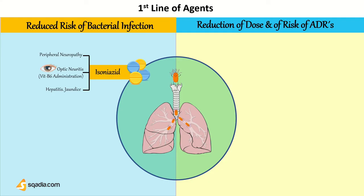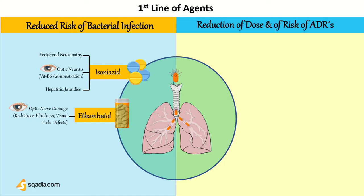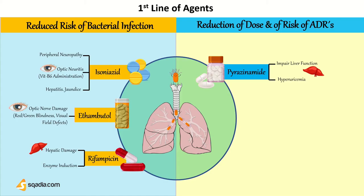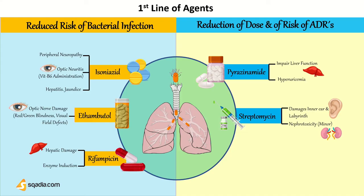Isoniazid also causes hepatitis. Ethambutol is famous for optic nerve damage — it can cause visual field defects and color brightness changes. Rifampicin gives a reddish color to the urine, which can be mistaken for myoglobinuria or hemoglobinuria. It also causes hepatic damage and enzyme induction, responsible for drug interactions with other drugs. Pyrazinamide causes impairment of liver function and can also cause hyperuricemia — increased uric acid levels — that can cause gout. Streptomycin is responsible for ototoxicity and nephrotoxicity: it damages the inner ear and the labyrinth, and causes kidney toxicity.